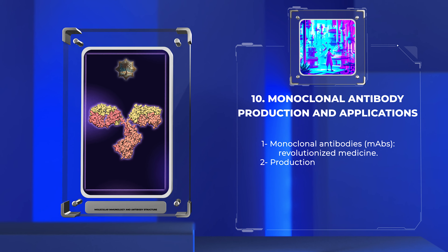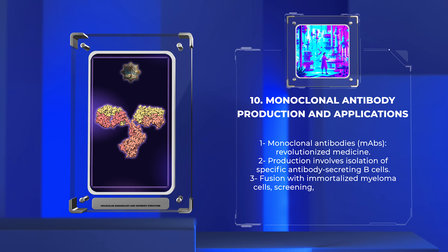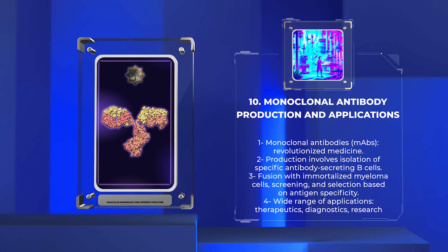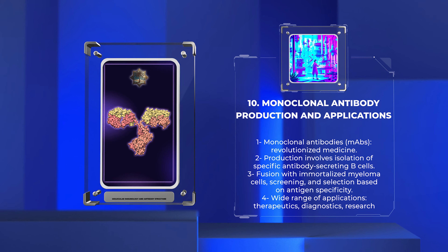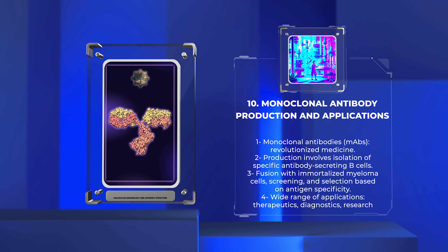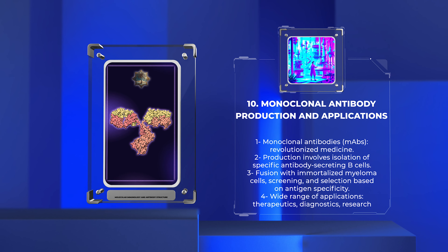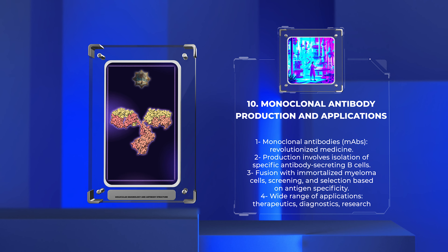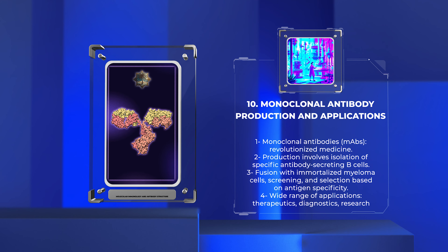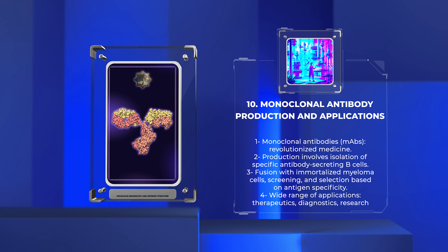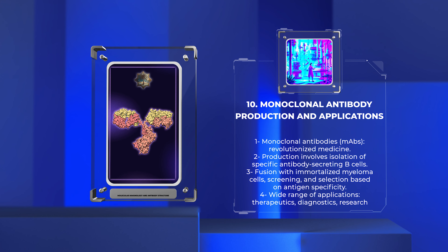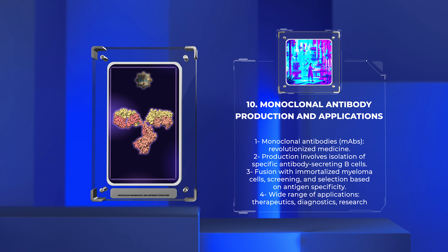Understanding glycosylation patterns is crucial for optimizing therapeutic antibody design and enhancing their efficacy. Monoclonal antibodies (mAbs) have revolutionized medicine by providing targeted treatments for various diseases. Their production involves the isolation of specific antibody-secreting B cells, fusion with immortalized myeloma cells, and subsequent screening and selection based on antigen specificity.